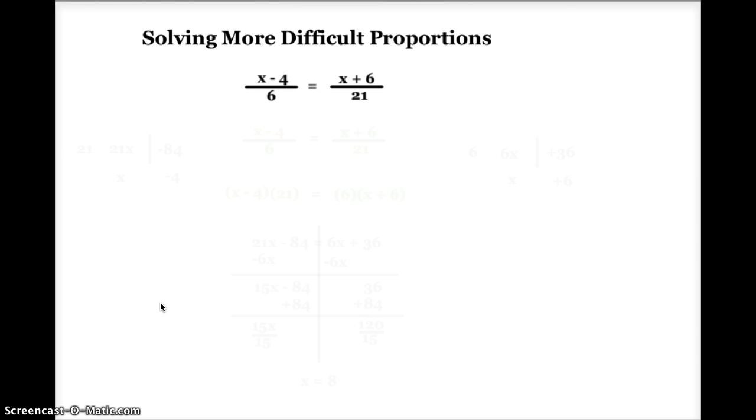To solve this proportion, I'm going to use cross products or cross multiplication. I've rewritten this proportion and color-coded the cross products. One of the pairs of cross products is in red, while the other pair of cross products is in green. To solve this problem, I'm going to multiply each of the cross products and set them equal to each other.